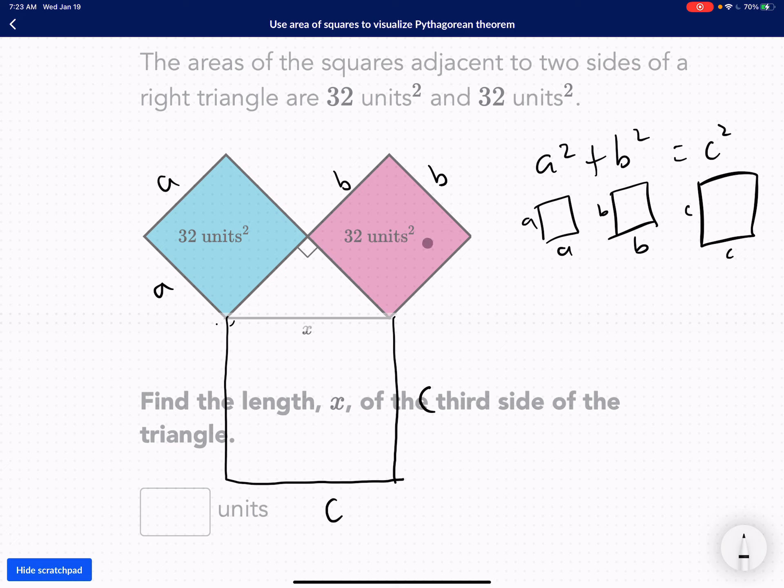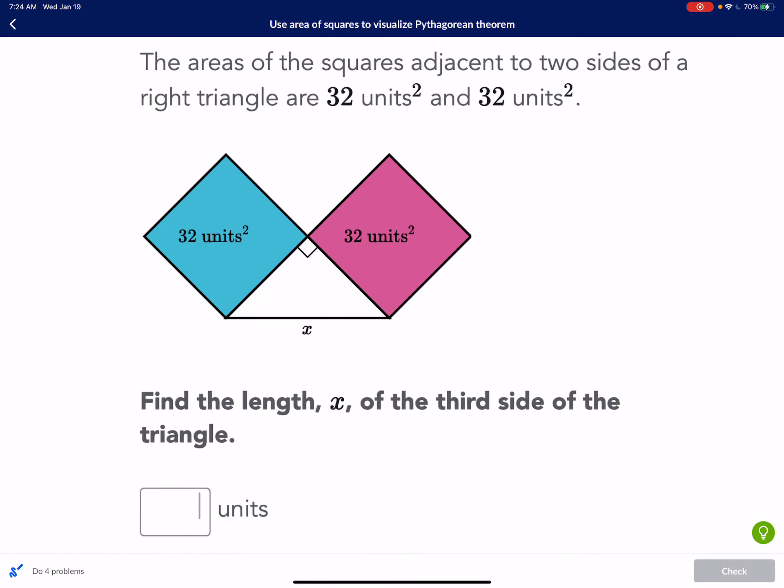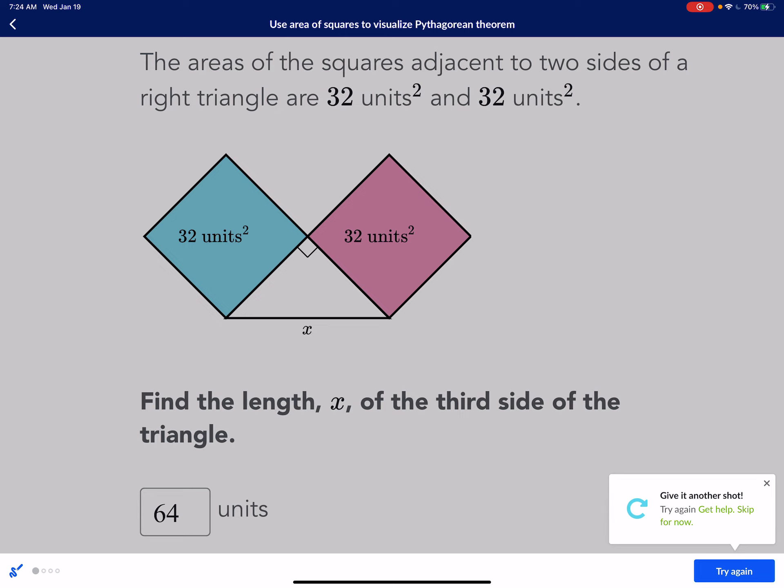32 plus 32, which is 64. So this area is going to be 64 units because that's the square. This is 32 units of area, 32 units of area, 32 plus 32 is 64. So my answer is going to be 64, 64 units. And we're good.